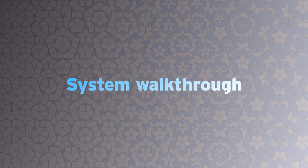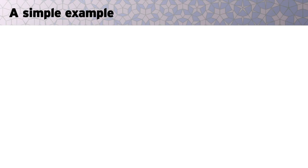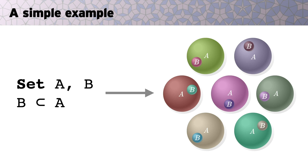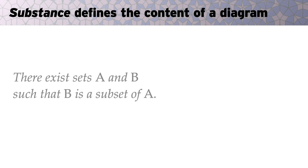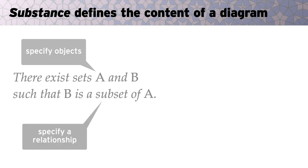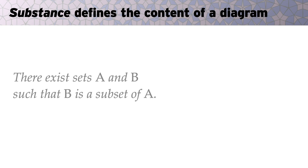Okay, let's talk a bit about the system details and implementation. As a running example, I'll consider how statements about sets get translated into simple Venn diagrams. These statements are expressed in the Substance language, which resembles standard mathematical notation. For instance, in mathematical prose, one might declare objects, such as two sets, and assert relationships between them, such as containment.